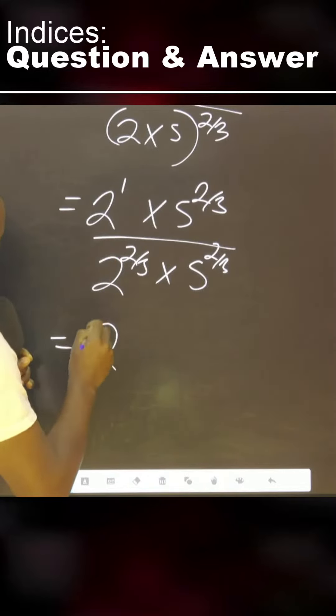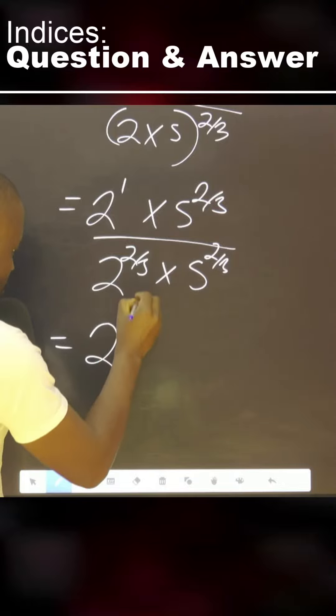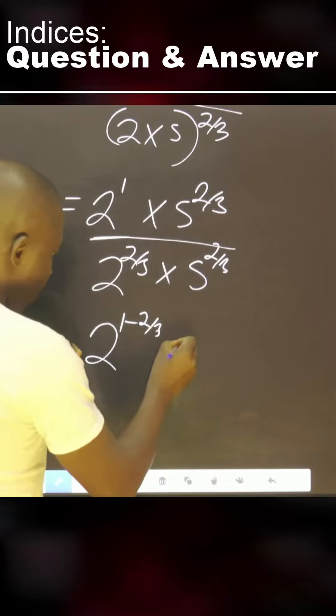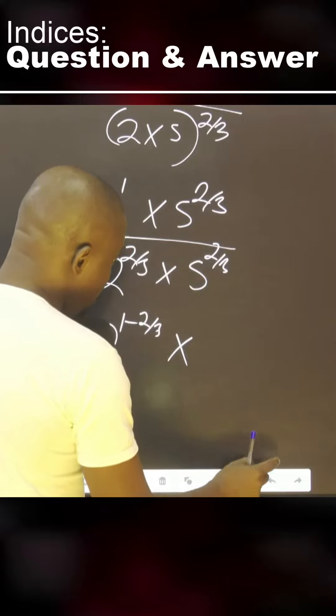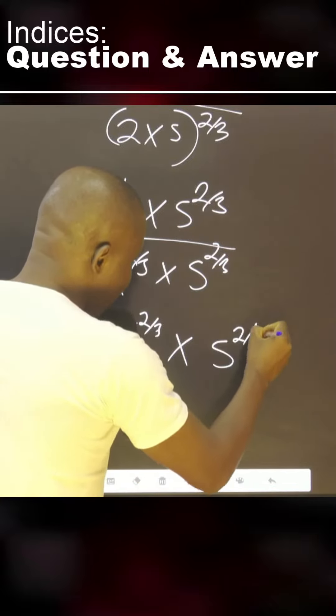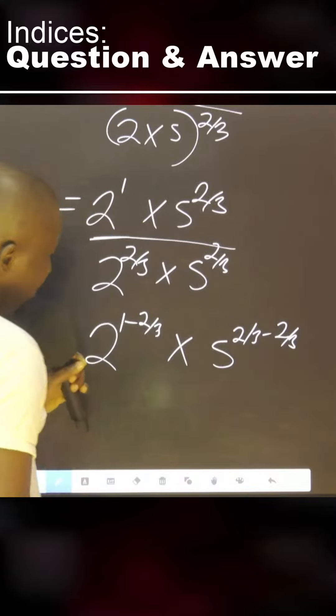This and this are the same. We can easily say 1 minus 2 over 3 because of this divide. Multiply by, what about this? This and this two can go. To have 5, 2 over 3 minus 2 over 3.